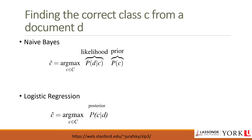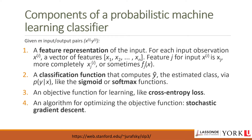In logistic regression, as a discriminative model, the goal in text categorization is to directly compute the probability of class c given document d — p(c|d). It may learn to assign high weight to features that directly improve its ability to distinguish between possible classes, even if it couldn't generate an example of one of the classes. Like Naive Bayes, logistic regression is a classifier that makes use of supervised machine learning.